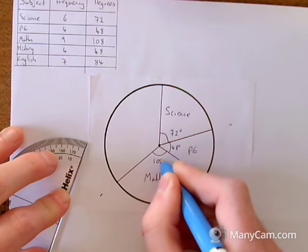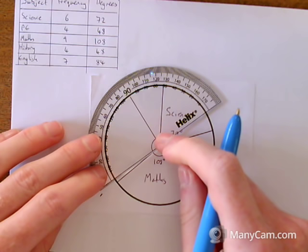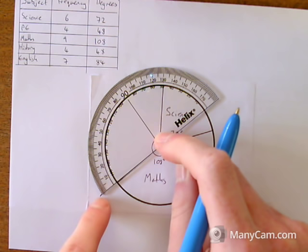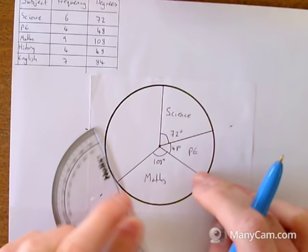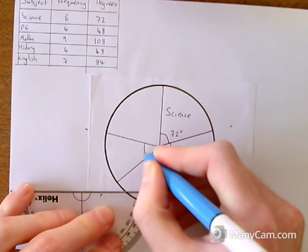And then I'm going to use my new line again to draw my next section of my pie chart. Crosshair lined up with the middle, bottom line lined up with my new line. I'm going to use the outside scale again, because it starts at zero where my line starts. And this time it's history, and that's 48 degrees. Come around to 48 and make a mark just there. And then label it as we go again. So that was 48 degrees. And that was history.